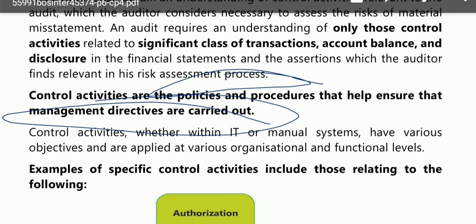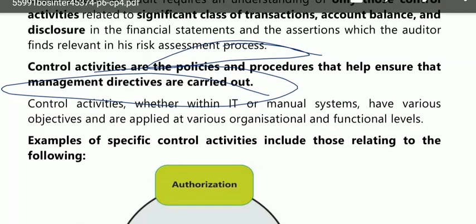Management has directed its entity, and the entity works accordingly. Control activities, whether within IT or manual systems, have various objectives and are applied at various organizational and functional levels. Control activities can be automated or manual. If the organization has a manual control system, the auditor checks manual controls; if automated, the auditor checks automated controls. This component was discussed in the previous video but is being repeated for clarity.